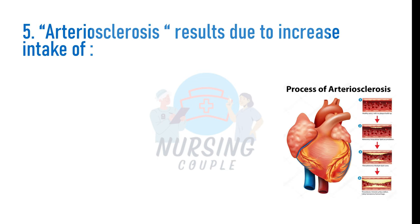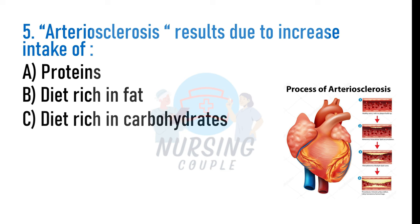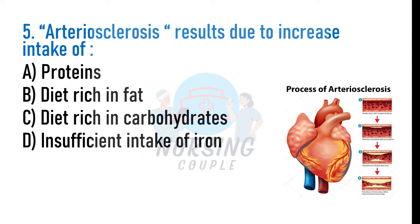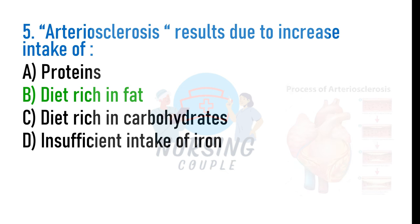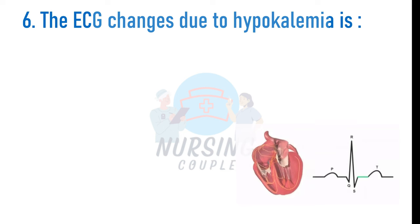Arteriosclerosis results due to the increased intake of: A. Proteins, B. Diet rich in fat, C. Diet rich in carbohydrates, D. Insufficient intake of iron. The answer is B: Diet rich in fat. Arteriosclerosis is a vascular disease where arteries become damaged by factors such as high fat intake, high cholesterol, high blood pressure, and diabetes. Both arteriosclerosis and atherosclerosis cause decreased perfusion of myocardial tissue and inadequate oxygen supply, leading to hypertension, angina, MI, heart failure, and death.